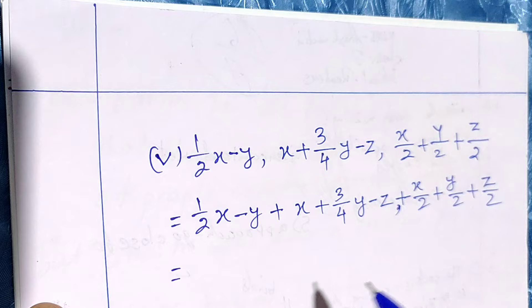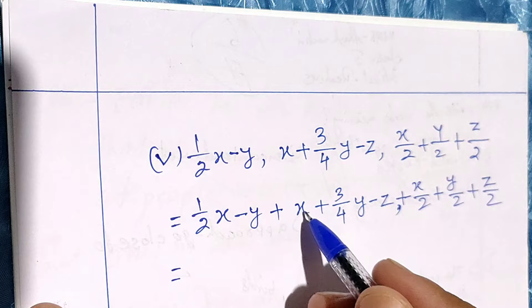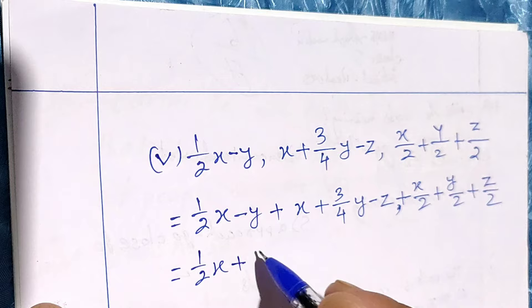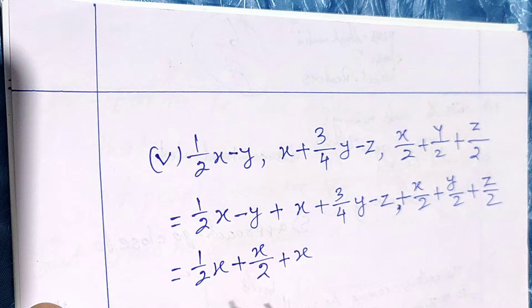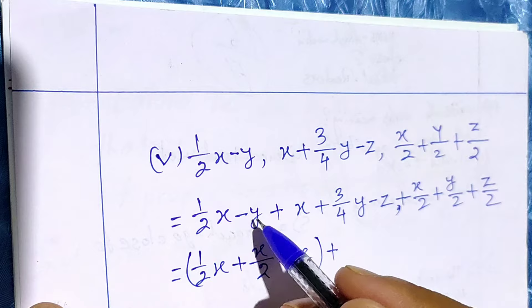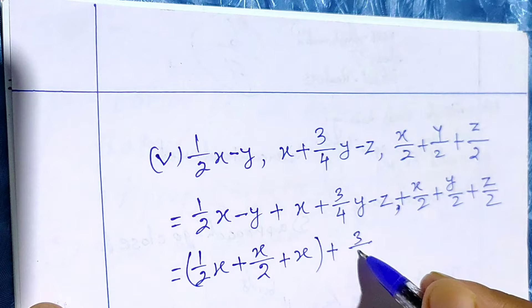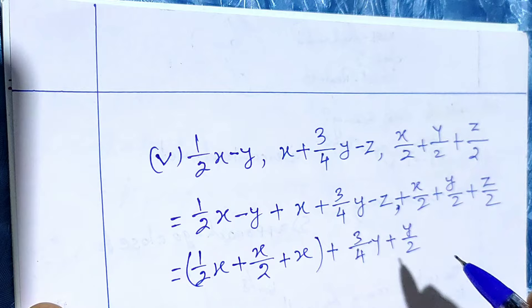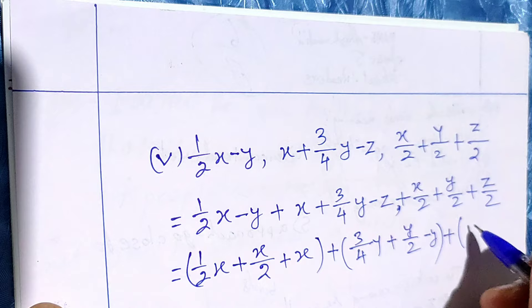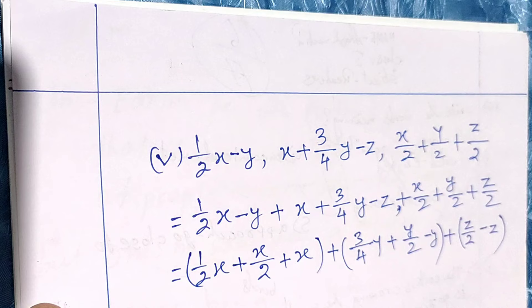Now let us group the like terms. The x terms: one-half x, x upon 2, and x are grouped together. The y terms: three-quarters y, y upon 2, and minus y are grouped together. The z terms: z upon 2 and minus z are grouped together. This is the grouping of three parts.